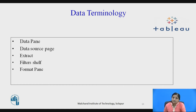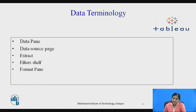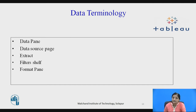Data source page is a page where the data source is laid out. It consists of four areas: the left pane, join area, preview area, and metadata area. Extract is a saved subset of a data source used offline to analyze and improve performance. Extracts can be created by defining filters and limits on the data in the data source, so that only the required data is included for analysis.